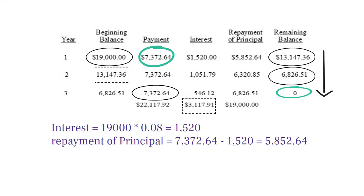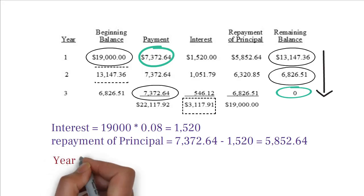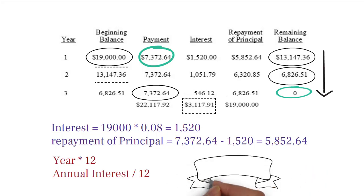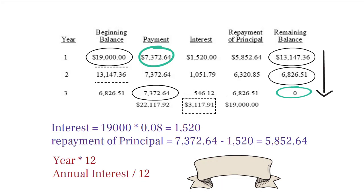Now, you can make an amortization schedule for more than 3 years or even for monthly. By the way, for the monthly amortization schedule, you must multiply the year by 12 and divide the annual interest by 12. All the other numbers will remain the same. I hope this video helps. Thanks for watching.